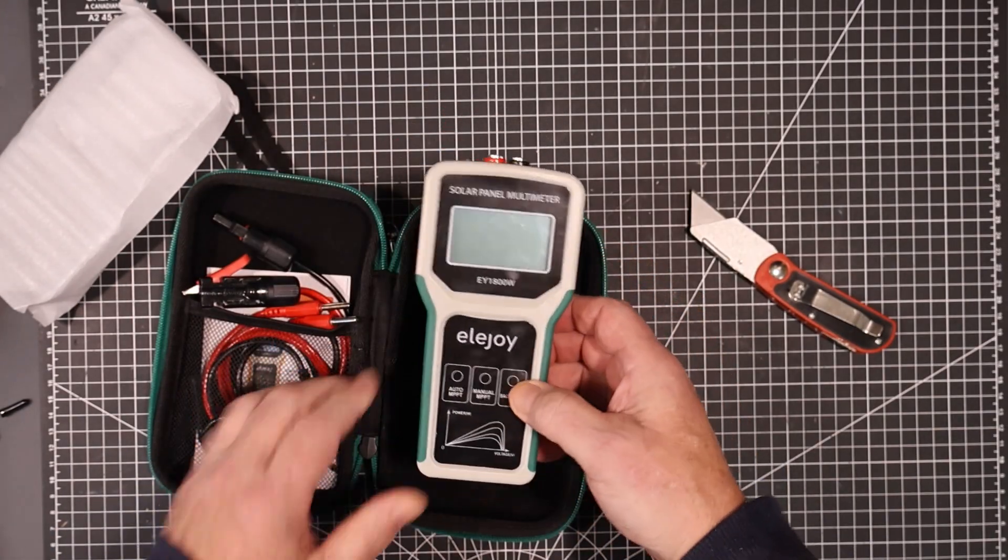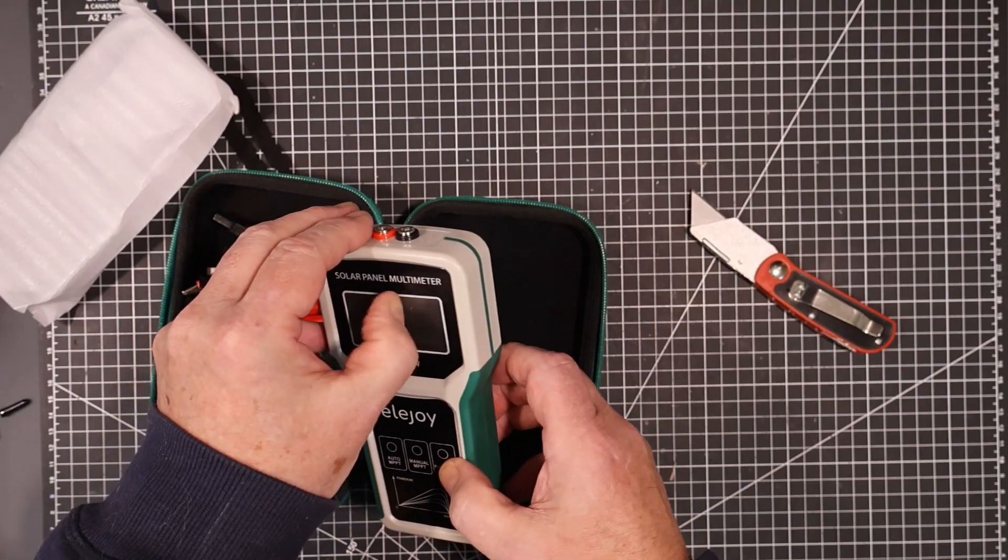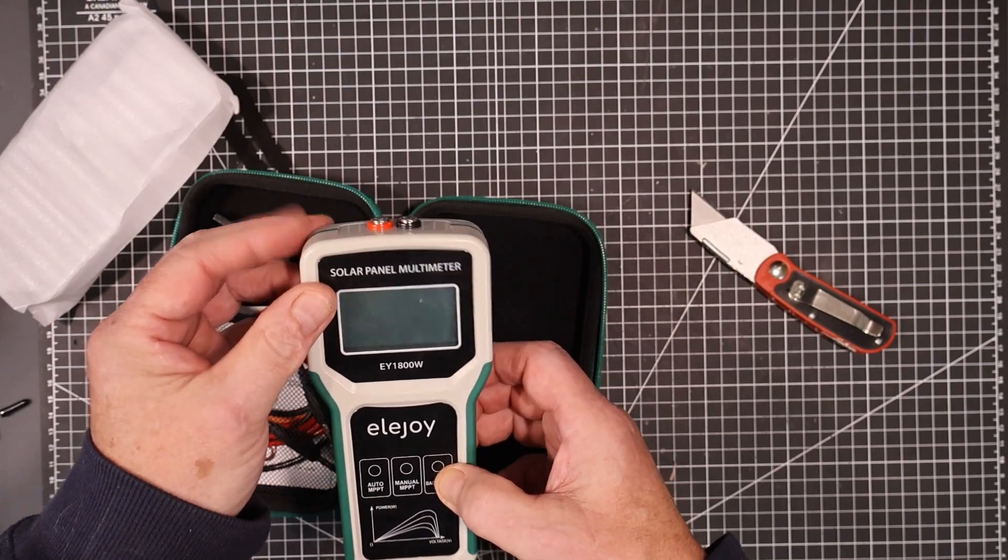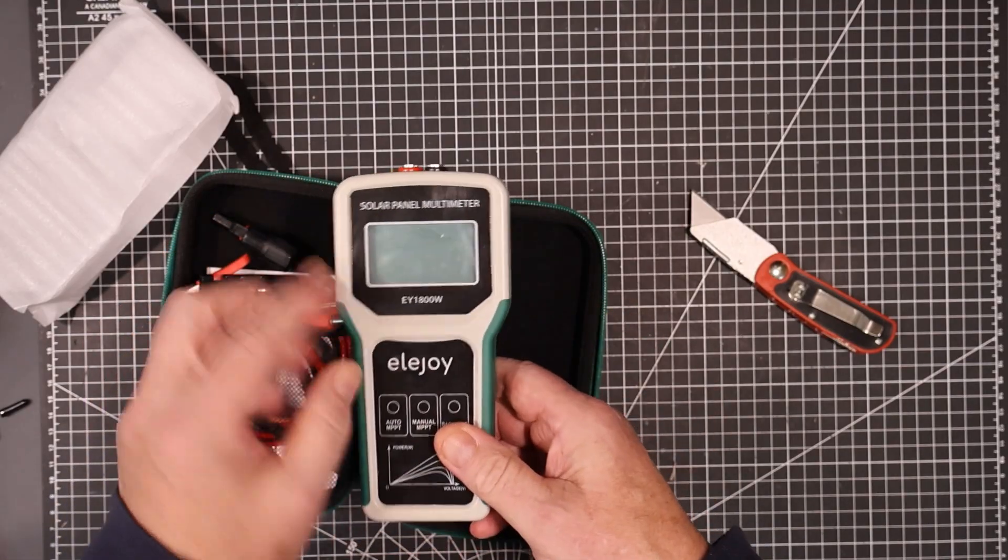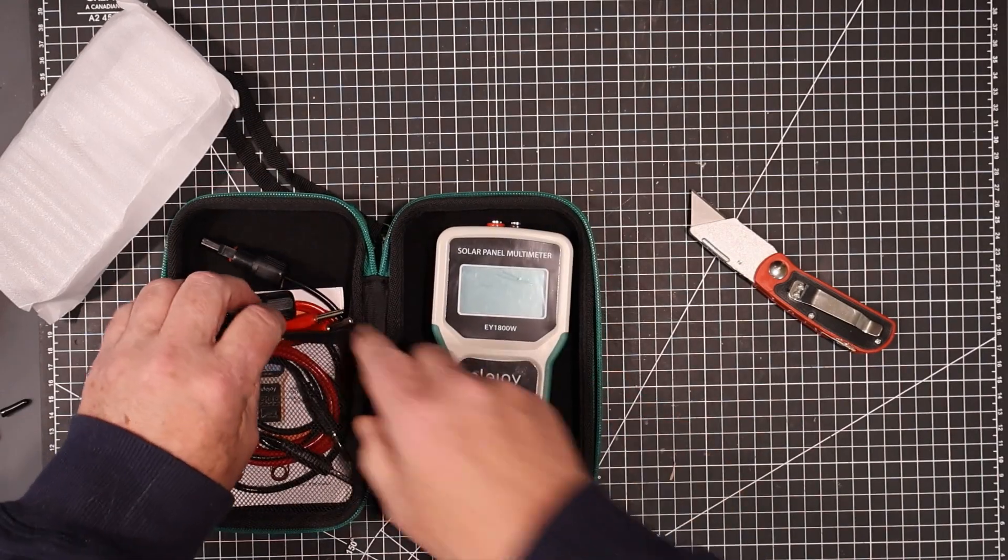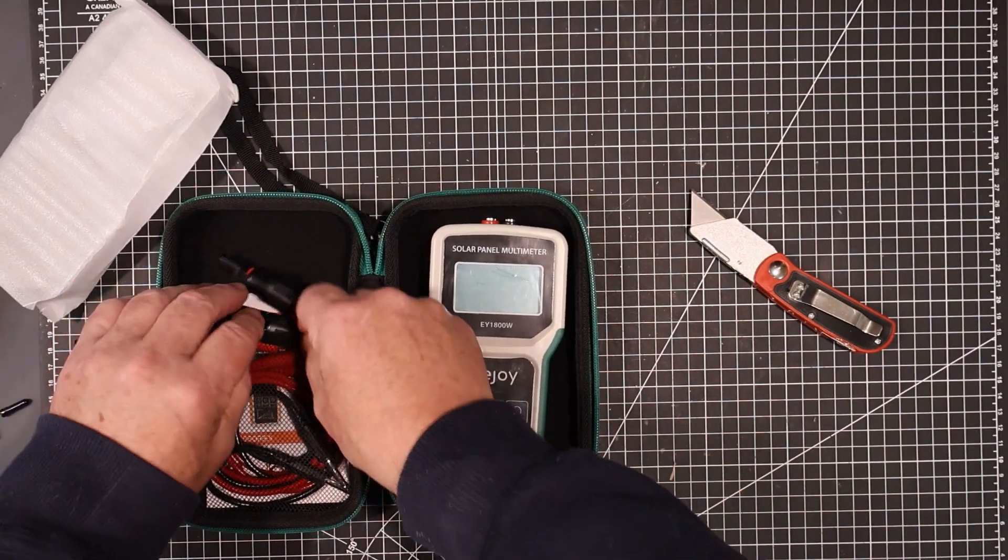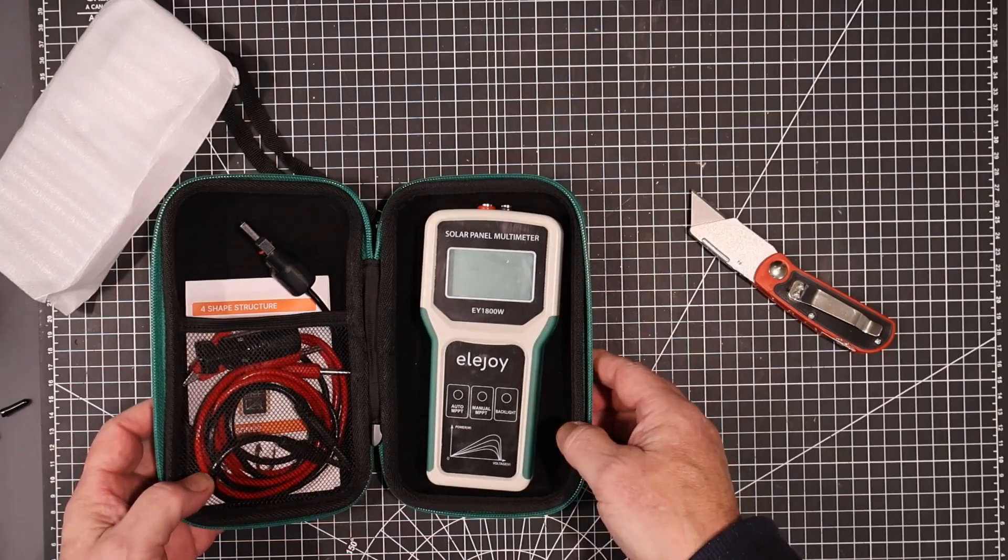Now they're powered off the solar panels, so I can't power it up to show it to you. But this is supposed to be good for up to a little thing on here, up to 1800 watts. That's going to come in handy. I do have several solar panels and this will give me the MPPT reading from them.